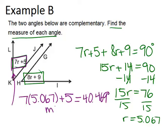So that means the measure of angle LKJ, or you could just say the measure of angle K, equals 40.469 degrees.